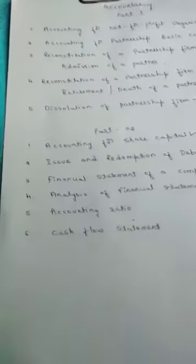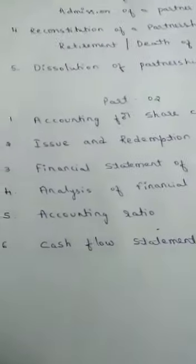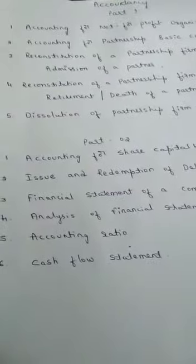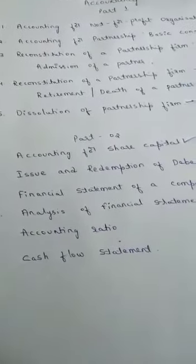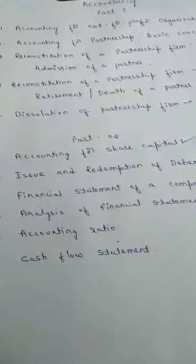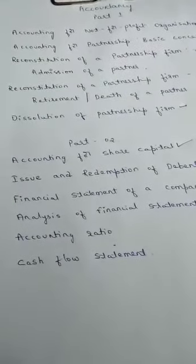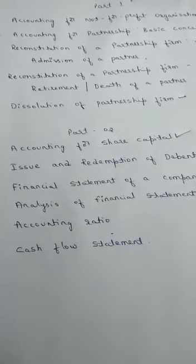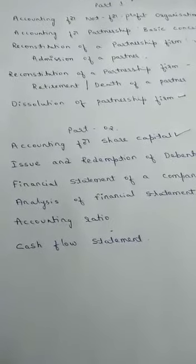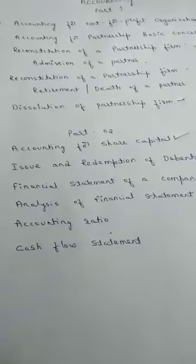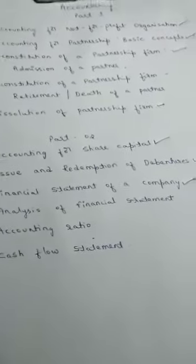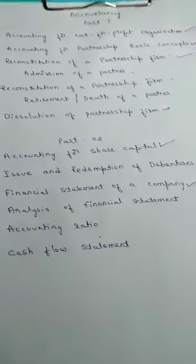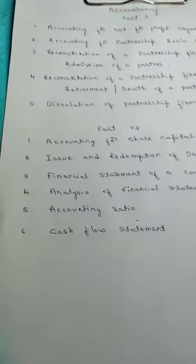Chapter 5 is accounting ratios. As stated earlier, financial statements aim at providing financial information about a business enterprise to meet the information needs of decision makers. This chapter covers the technique of accounting ratios for analyzing the information contained in financial statements, for assessing the solvency, efficiency, and profitability of the firm.